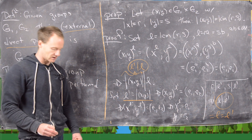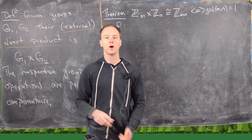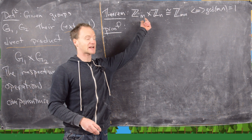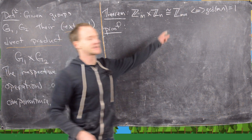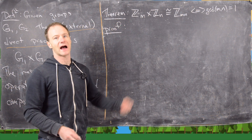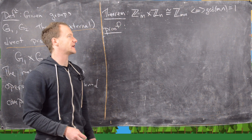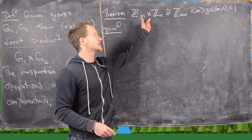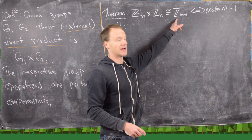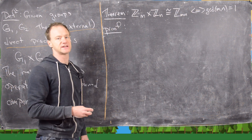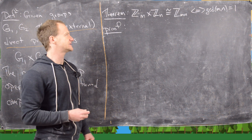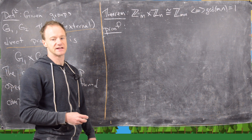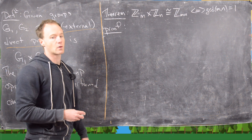Building off this, we have a super important theorem: the direct product Zm cross Zn is isomorphic to Zmn if and only if gcd(m, n) = 1. In other words, the cross product of two cyclic groups is cyclic if and only if the orders of those cyclic groups are relatively prime. This classifies combinations of all cyclic groups — any cyclic group is isomorphic to Zm, so this tells us exactly when you can take the direct product of cyclic groups and get a cyclic group again.